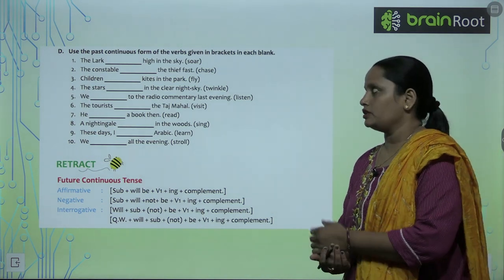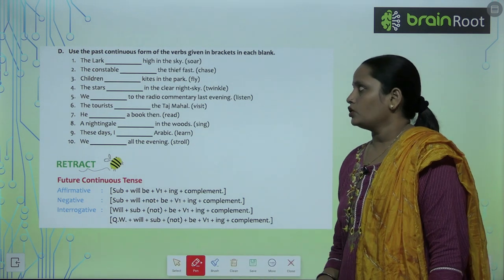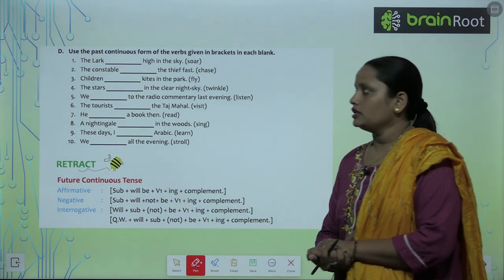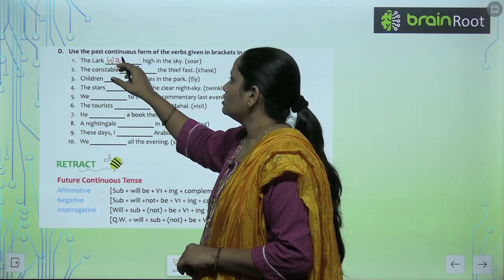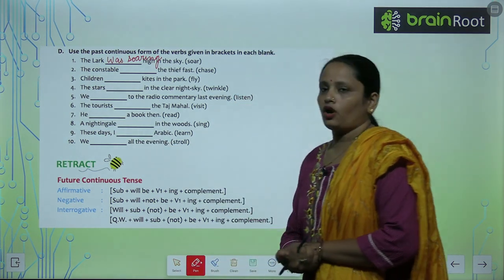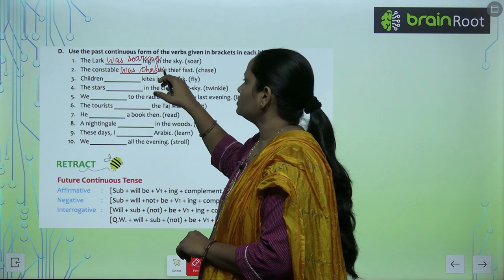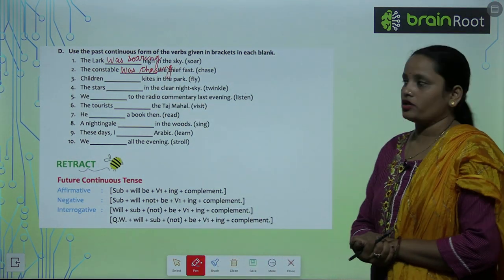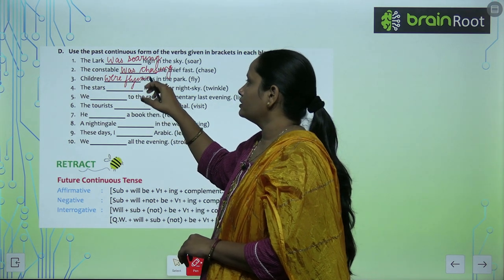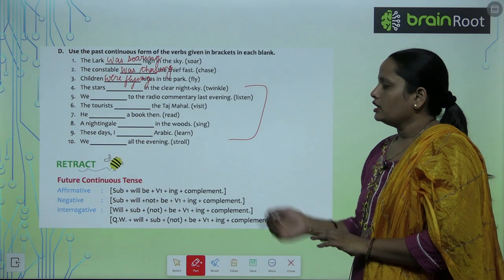Now Exercise D: Use the past continuous form of the verb given in brackets in each blank. 'The lark ___ high in the sky (soar)' — lark is singular, so: 'The lark was soaring high in the sky.' 'The constable ___ fast (chase)' — 'The constable was chasing fast.' 'Children ___ kites in the park (fly)' — children is plural, so: 'Children were flying kites in the park.' Complete questions 4 to 10 similarly.